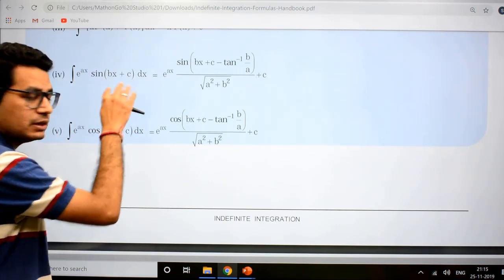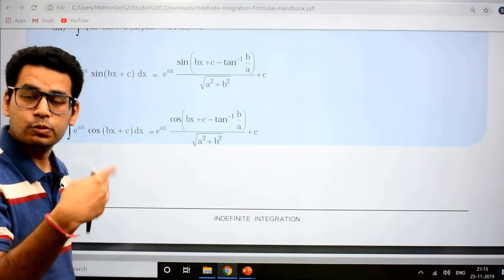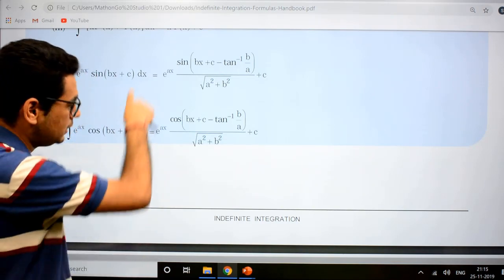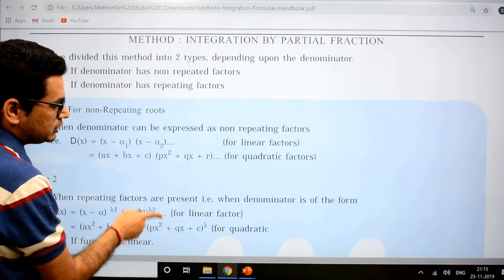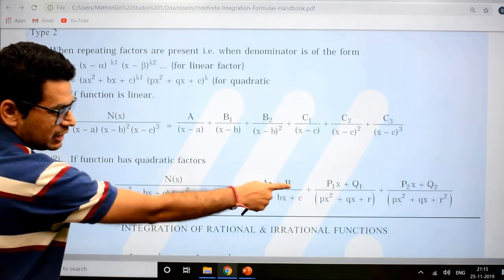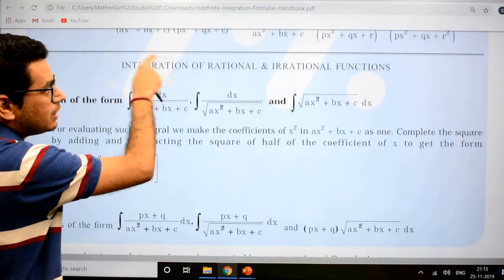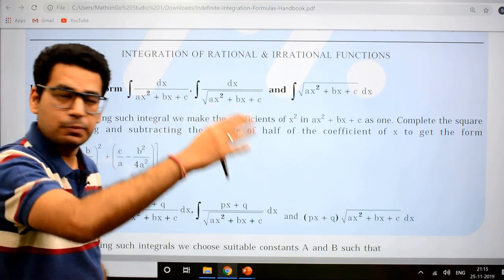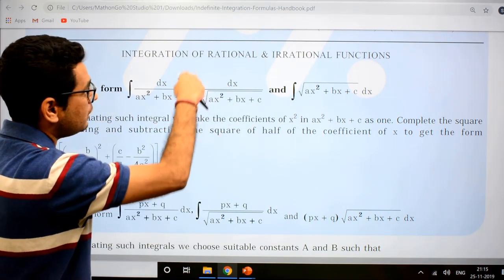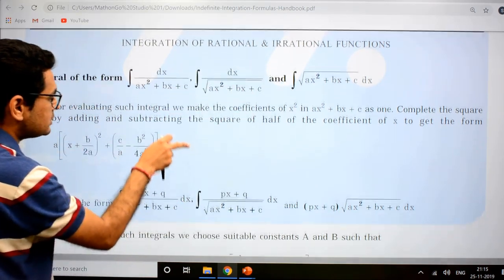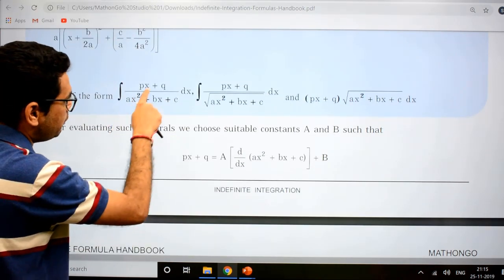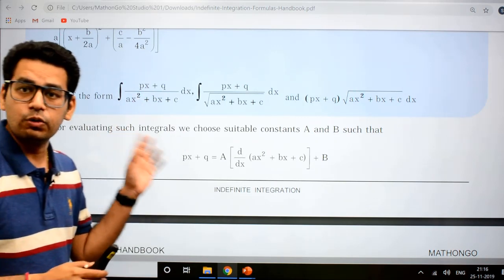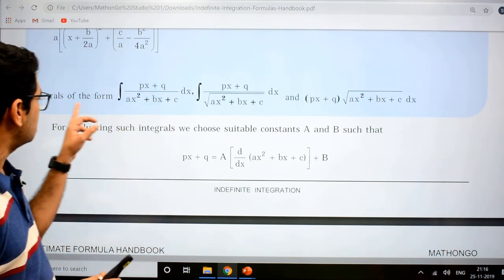Then e^(ax)·sin(bx+c) - generally people don't remember this, they forget it, they can't add it to their formula sheet. Again, that is in your formula sheet. Then a quick revision of how to do partial fractions. What are the formulas for partial fractions? Up to this point, it will help you in board exams. Board exams also have rational and irrational functions. So the complete formula set for this - see guys, it's available with you. If form is (px+q), you can download this PDF, take a printout, and use it.